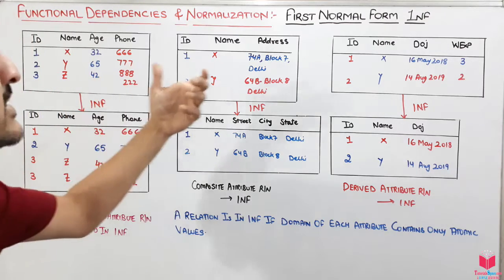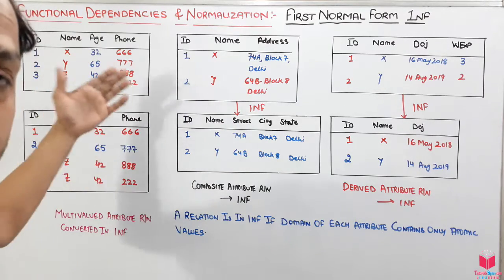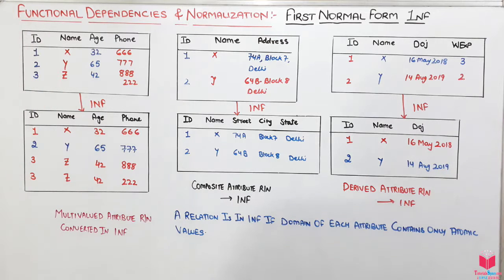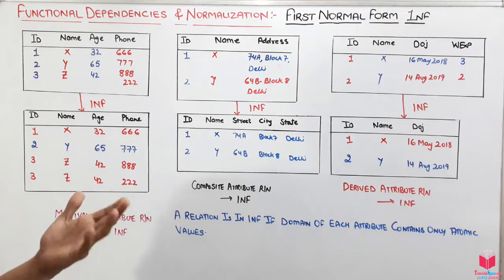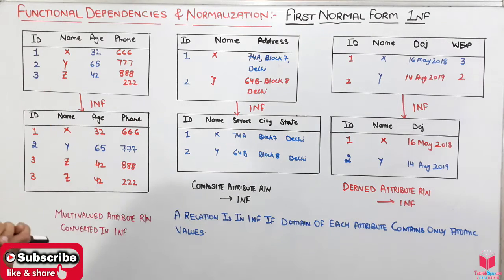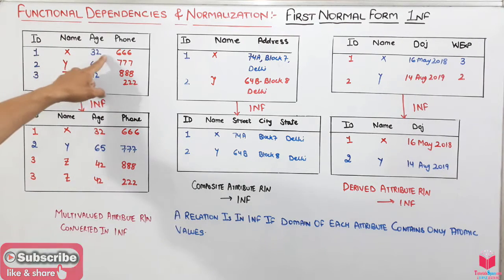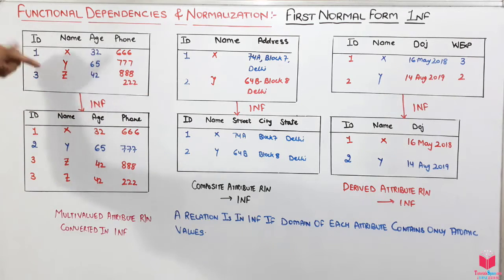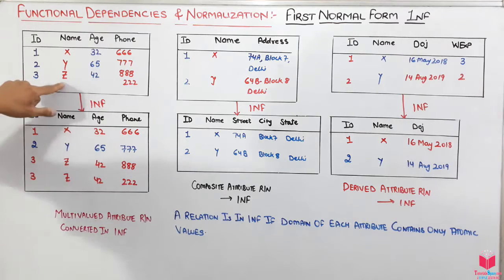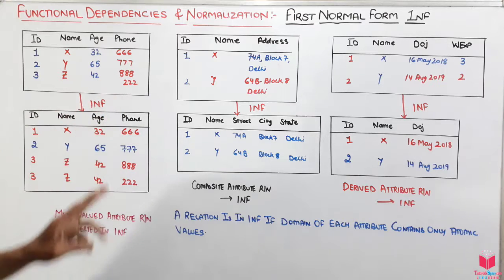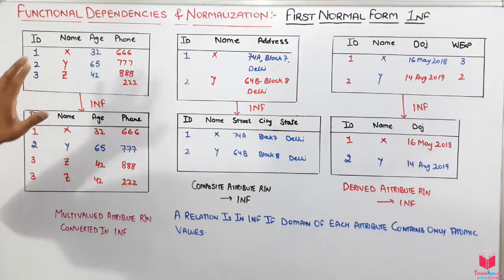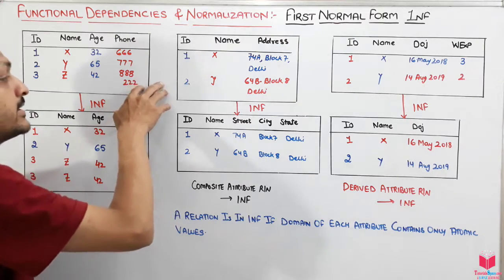We are taking three examples to see how we can convert a table into First Normal Form. This first table contains columns: id, name, age, and phone. We are not assuming id is the primary key — just a normal table. For id=1, name=X, age=32, phone=666. But for id=3, name=Z, age=42, there are two phone numbers: 888 and 222.